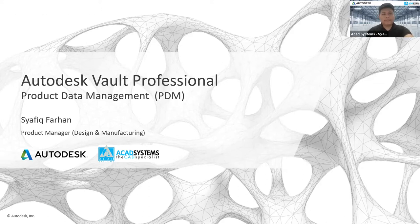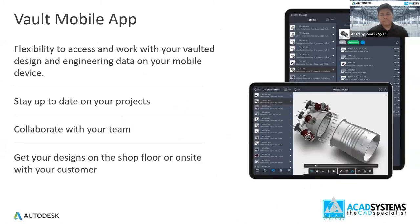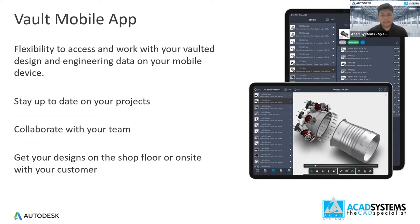First thing first, for Vault Professional — the new tools allow you to use mobile apps, giving you very good flexibility in terms of your design and engineering data on your mobile device. You will also stay up to date on your project. For example, if you are the project manager and your designer has already added something, you can see the update directly using the Vault mobile app.